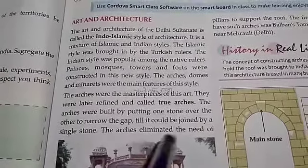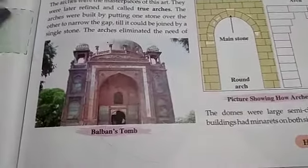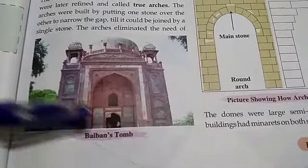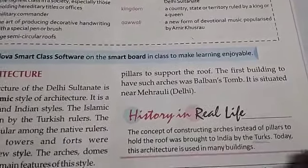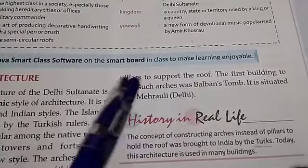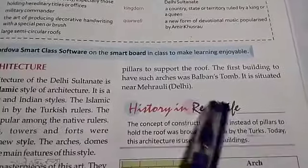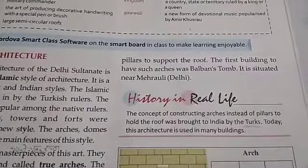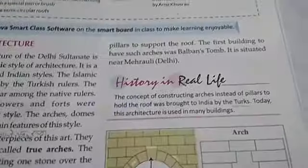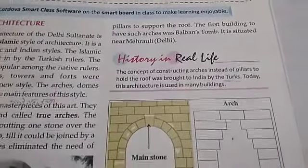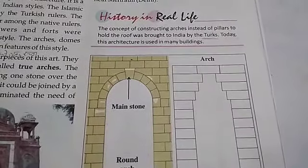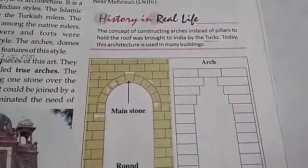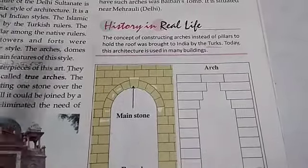The arches eliminated the need for pillars to support the roof. The first building to have such arches was Balban's Tomb, situated near Mehrauli, Delhi. The concept of constructing arches instead of pillars to hold the roof was introduced to India by the Turks, and today this architecture is used in many buildings.